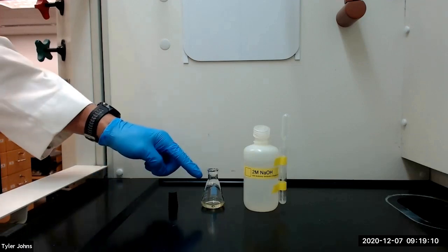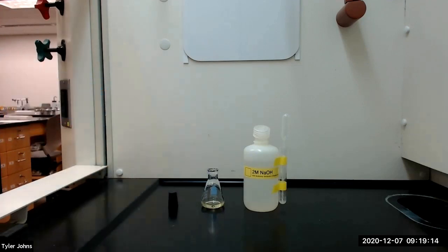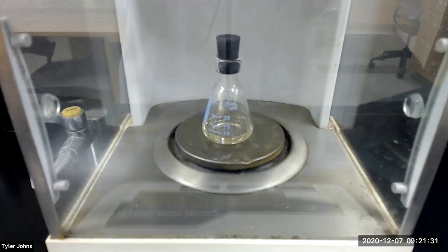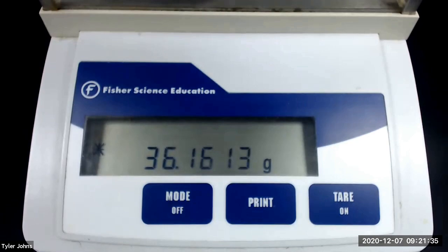We will next stopper the flask and then determine the mass of the flask and the solution. The mass of the flask and the solution is 36.1613 grams.